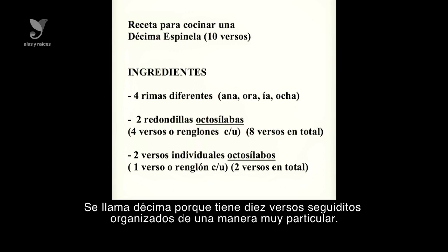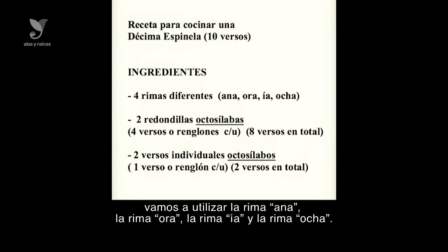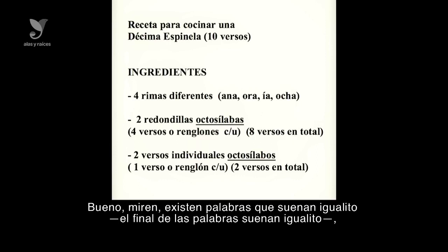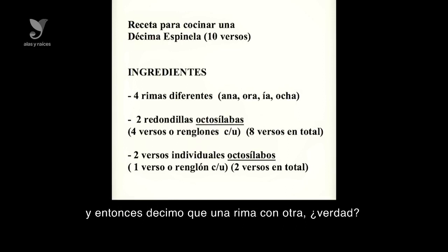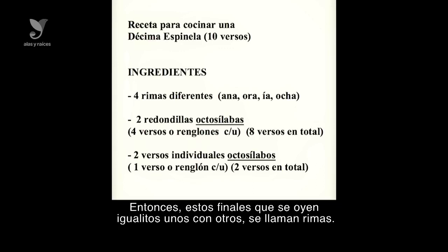Se llama décima porque tiene diez versos seguidos, organizados de una manera muy particular. Les vamos a decir los ingredientes. Necesitamos primero cuatro rimas diferentes. Vamos a utilizar la rima Ana, la rima Ora, la rima Ia y la rima Ocha. ¿Y qué es una rima? Existen palabras que suenan igualito al final y entonces decimos que una rima con otra. Estos finales que se oyen igualitos unos con otros se llaman rimas.